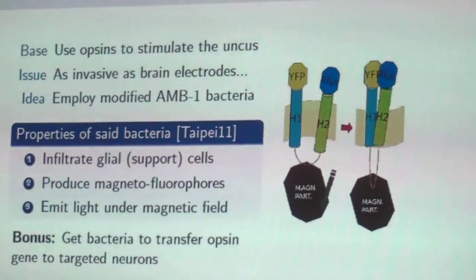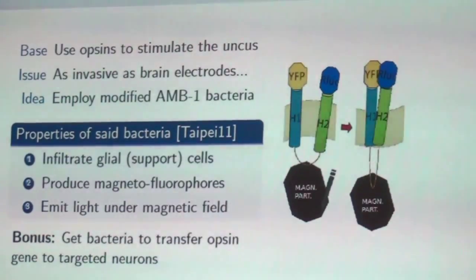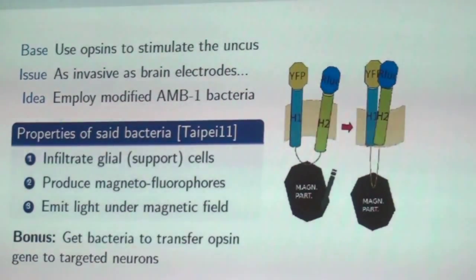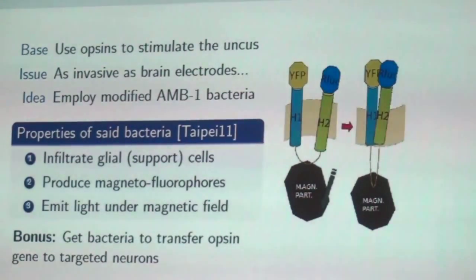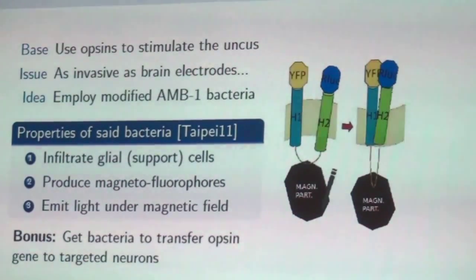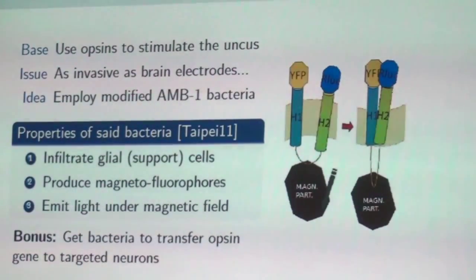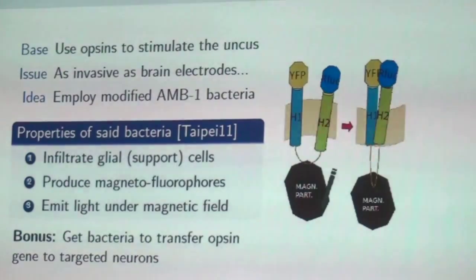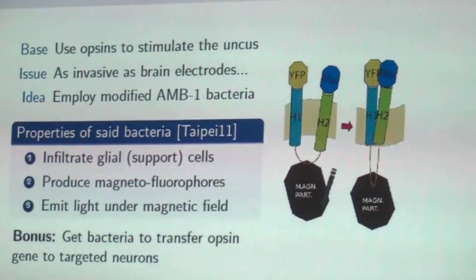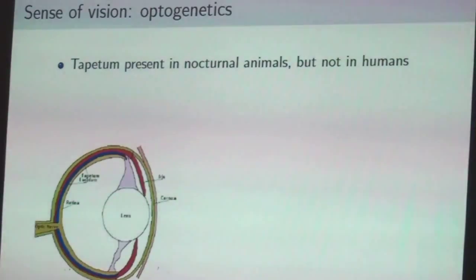You could also use the bacteria to transfer the opsin gene into the neurons in parallel to creating the magnetofluorophores — so you need only one injection into the brain to get the whole thing working. This gives you a technique to get an enhancement of the sense of smell.